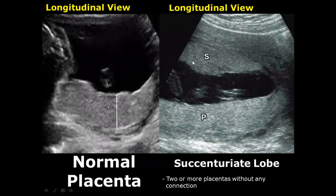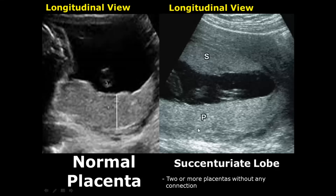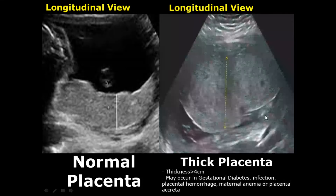A succenturiate lobe is an accessory placental lobe present in addition to the main placental lobe. Here we see the main placenta and an accessory placental lobe — the succenturiate lobe — without any connection between the two.